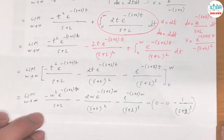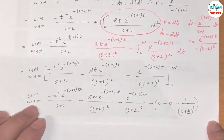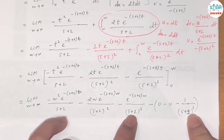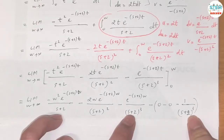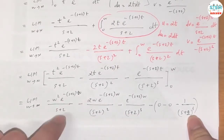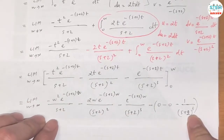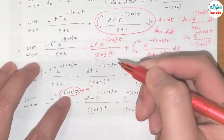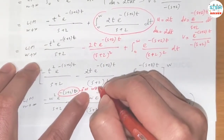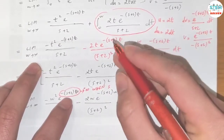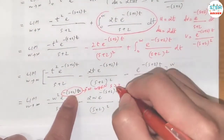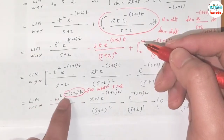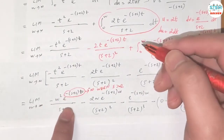Remember that for the Laplace transform to exist, its solution has to converge. The terms involving e to the negative s plus 2 times w converge when the exponent goes to negative infinity. This happens when s is greater than negative 2. So when s is greater than negative 2, as w goes to infinity, e to the negative infinity equals 0, making all those terms vanish.